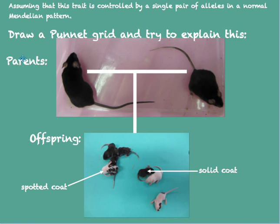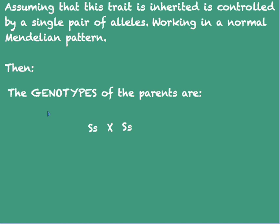Assuming that this trait is controlled by a single pair of alleles in a normal Mendelian fashion, draw a Punnett grid and try to explain this. The genotypes of these parents would have to be heterozygous.